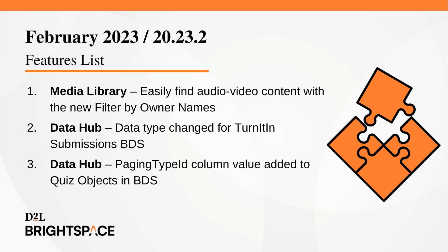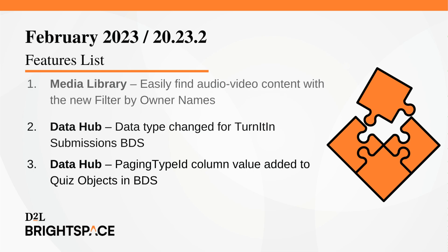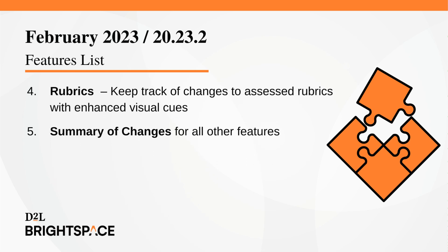Easily find audio-video content with the new Filter by Owner Names filter in Media Library. In DataHub, the Turnitin Submissions Brightspace dataset has updated the data type of the FieldID column, and the Quiz Objects Brightspace dataset has added the Paging Type ID column. Keep track of changes to assessed rubrics with enhanced visual cues using the Rubrics tool. And finally, a summary of changes for all the other features this month.